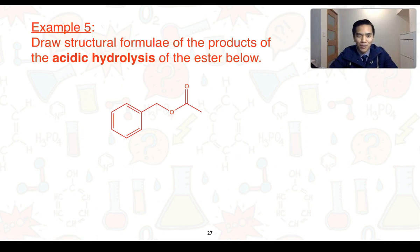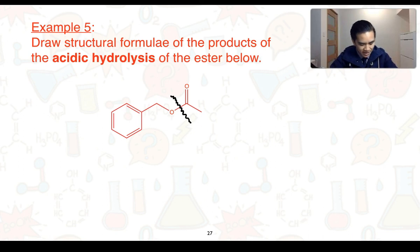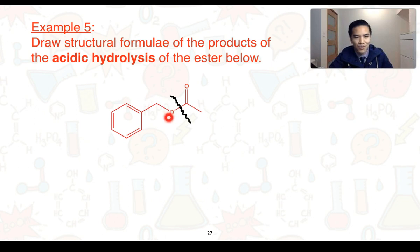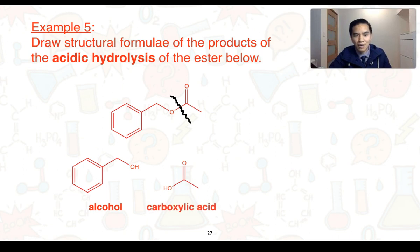Example 5: draw the structural formula of the products of the acidic hydrolysis of the ester below. To do that, we firstly identify where our ester functional group is, which is here. In terms of where it breaks apart, it separates at this carbon-to-oxygen single bond. Over to the left, we've got a single oxygen, so this is going to form the alcohol. Given its acidic conditions, this section of the molecule is going to form our carboxylic acid. So the first product is an alcohol and the second is our carboxylic acid.